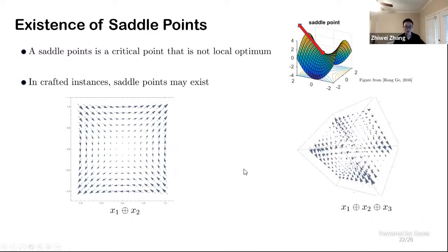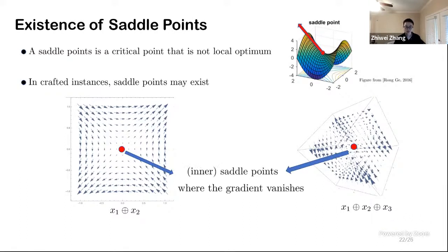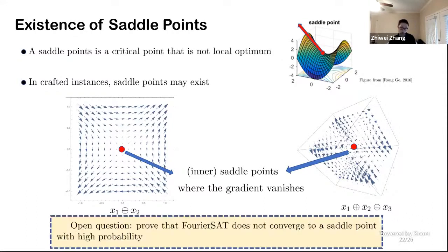For example, those are the gradient plots for XOR constraints. You can see that just at the middle of the Boolean box, saddle point exists, where the gradient vanishes. But practically, we observed that our framework seldom converges to such a saddle point. So an open question we raise here is to prove that our framework does not converge to saddle point with high probability.